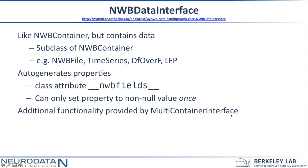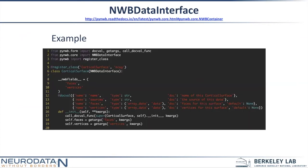I'll also talk about MultiContainerInterface, which has additional functionality for auto-generating subcontainers of a container. Here's an example of an NWBDataInterface — Oliver used this CorticalSurface extension as an example in an earlier talk. This CorticalSurface container consists of two datasets: faces and vertices. We want this CorticalSurface object to be able to access faces and vertices.